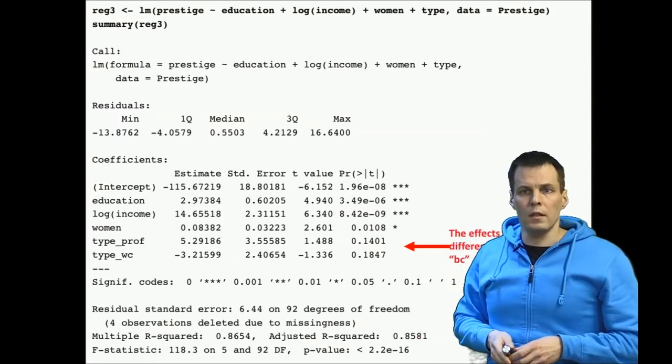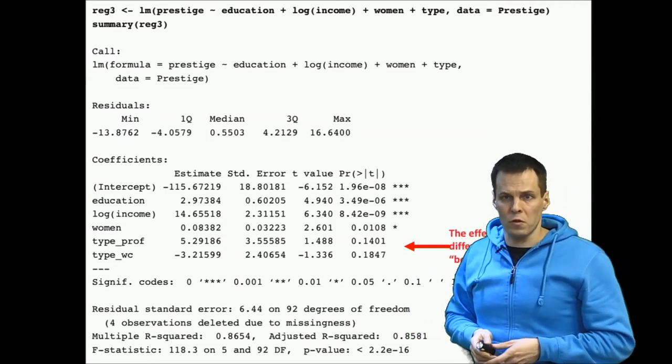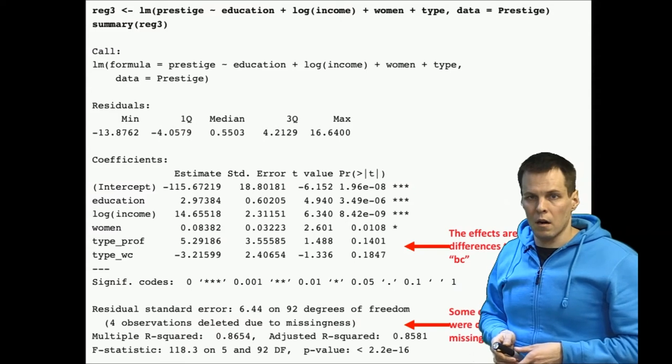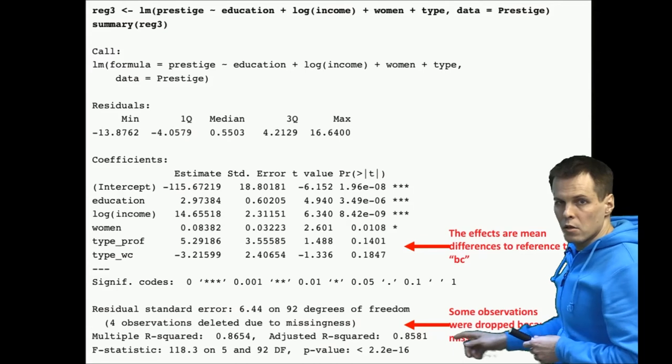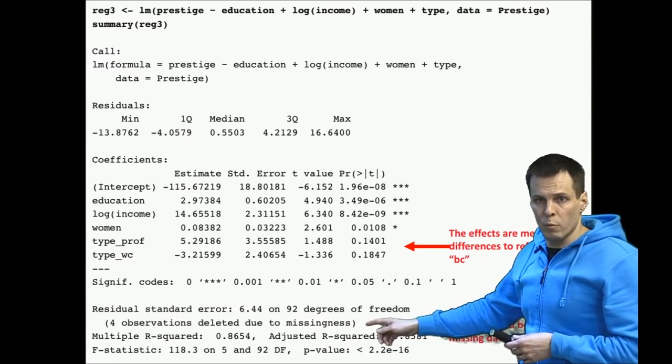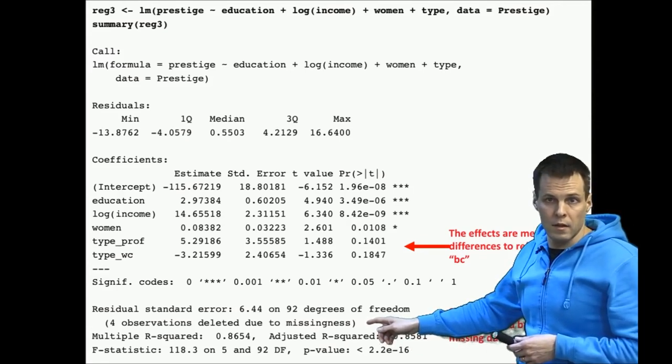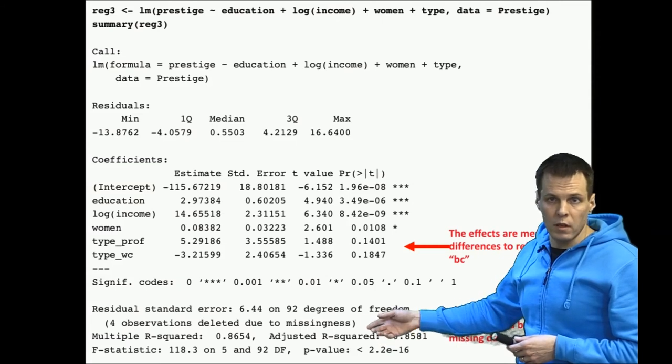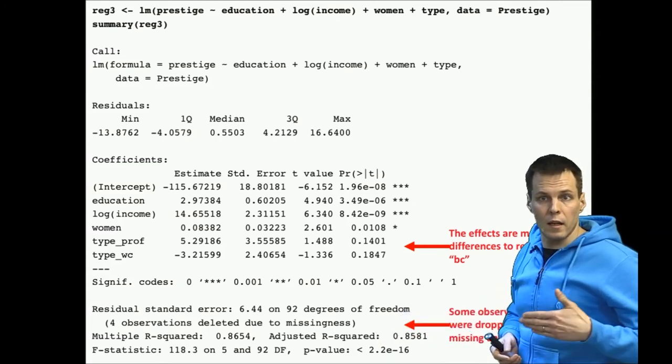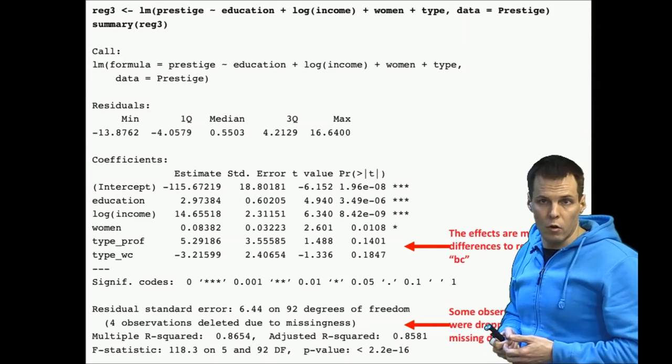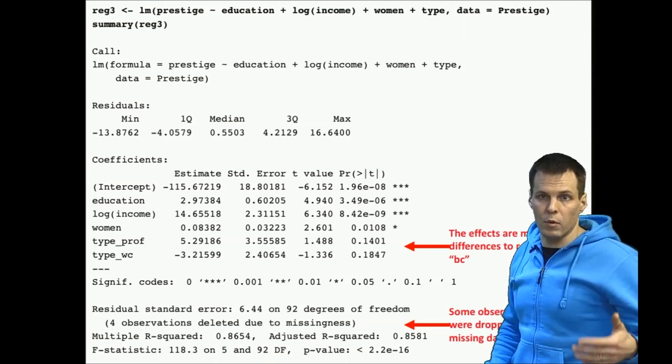One more thing we note here for the first time is that R tells us there are missing observations from the data. Four observations were missing because they didn't have a type variable. Quite often when you have missing data, the default action is just to omit those cases for which a variable doesn't have any values.